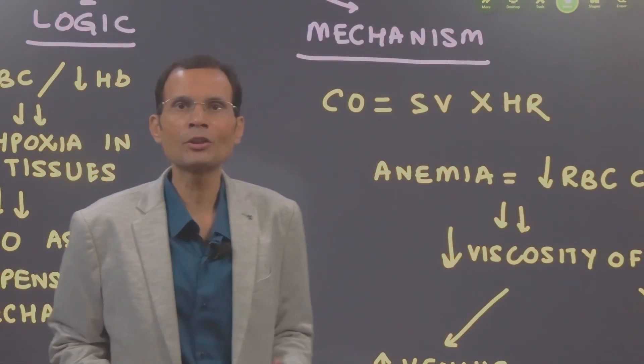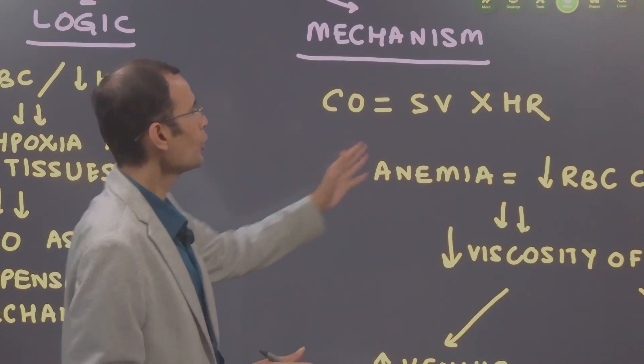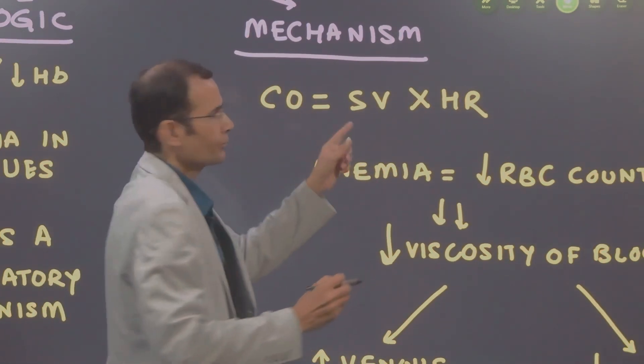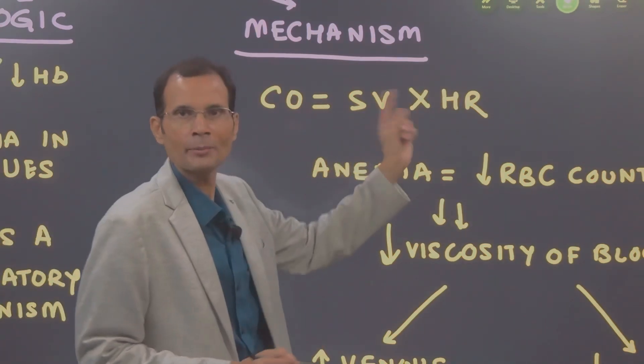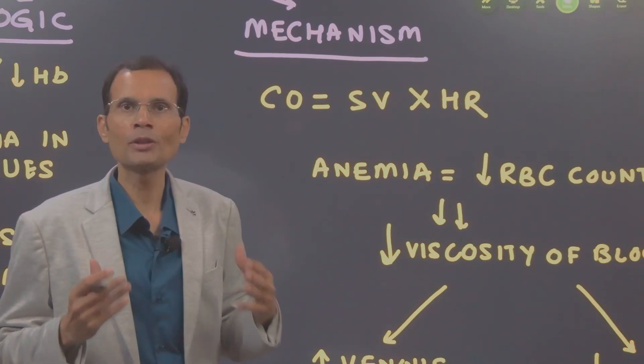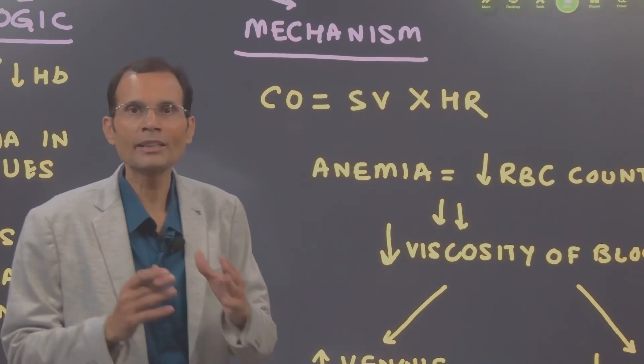Cardiac output is equal to stroke volume into heart rate. It is a product of stroke volume and heart rate. Now if any of them, either of them increases, either stroke volume or heart rate, if it increases, the cardiac output will increase. So let's look at them one by one.